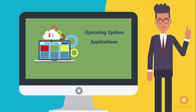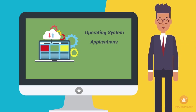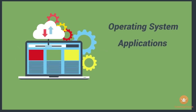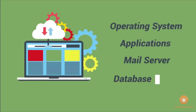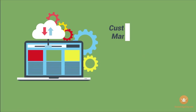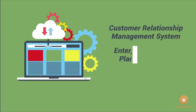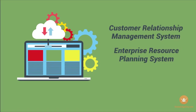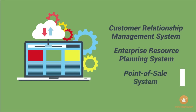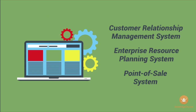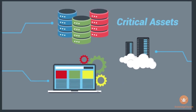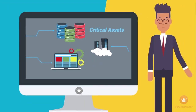Going out doesn't necessarily mean going out to the internet — it can be going out to the LAN. On the host, whether Windows or Linux, you will have an application sitting there: a mail server, a database server, a customer relationship management system, an enterprise resource planning system, a point of sale system — really anything sitting on your host. The application is where the data lives; that's where the information is.